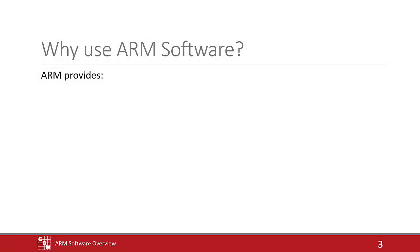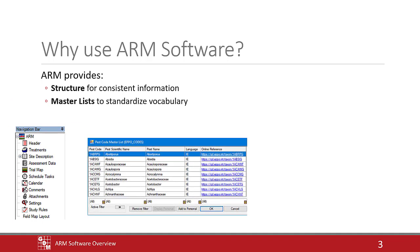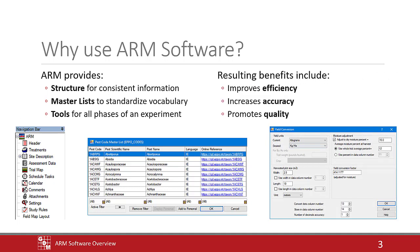ARM provides a defined structure to enter information consistently, with master list dictionaries to standardize vocabulary, and has tools for every step of an experiment. Using ARM improves efficiency, increases accuracy, and promotes better quality of results.